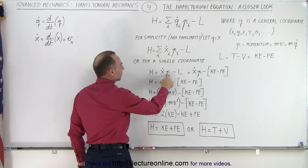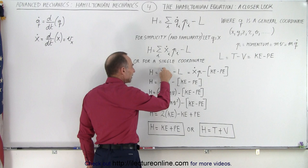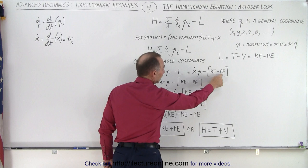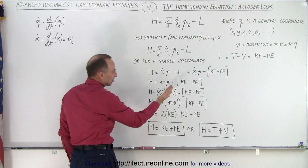So here we have X dot P. Now remember, X dot is the X coordinate, taking the derivative of that with respect to time, which turns that into velocity. So essentially, this is like velocity times momentum. And remember that the Lagrangian is the kinetic energy minus the potential energy, so we're going to subtract that from this product.